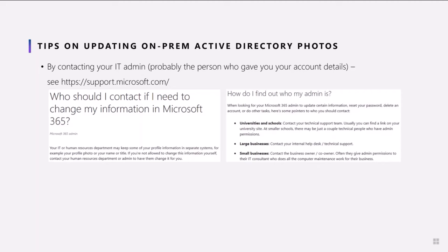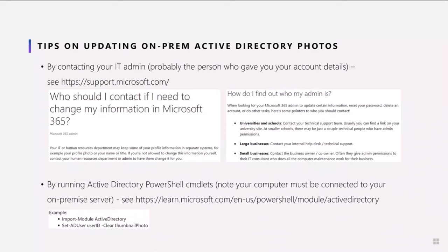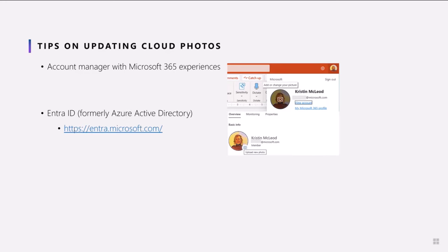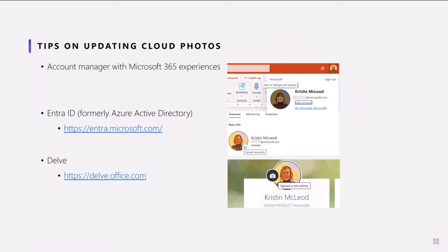To change or delete on-premises Active Directory photos, the easiest way is to contact your IT admin — the person who gave you your account details. Alternatively, reach out to technical support or HR in your company. You can also run Active Directory cmdlets yourself, but your computer must be connected to your on-premises server. Updating photos in the cloud is easier — go to the account manager within Microsoft 365 experiences, typically in the top right corner. Enterprise users can also update via Entra ID or Delve if your company has a license.